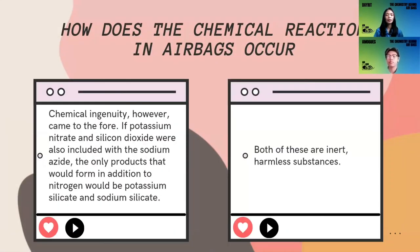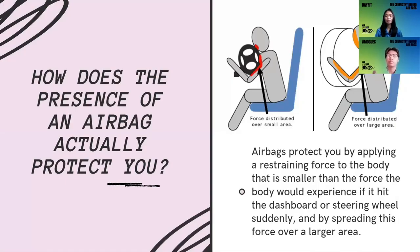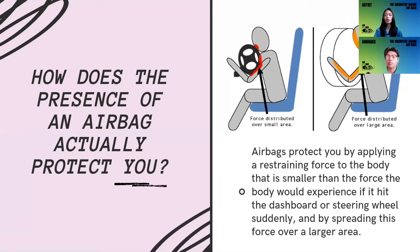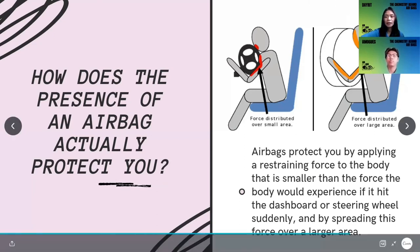Chemical integrity, however, came to the fore. If potassium nitrate and silicon dioxide were also included with the sodium azide, the only products that would form in addition to nitrogen would be potassium silicate and sodium silicate — both of which are inert, harmless substances. How does the presence of an airbag actually protect you? The force is distributed over a large area. Airbags protect you by applying a restraining force to the body that is smaller than the force the body would experience if it hit the dashboard or steering wheel suddenly, and by spreading this force over a large area.